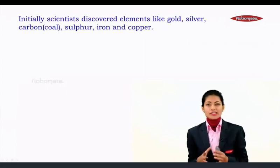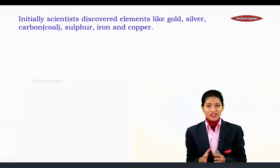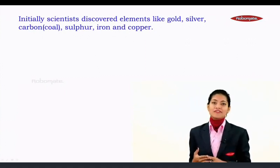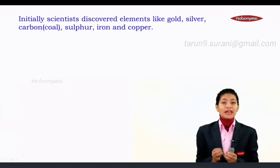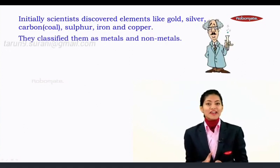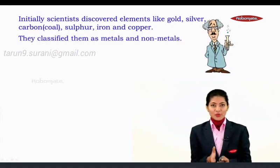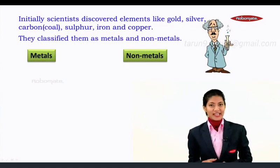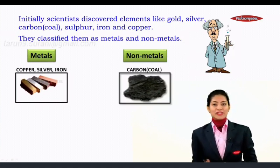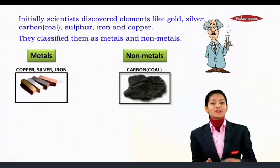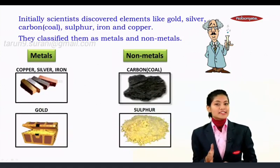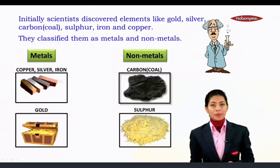Initially, various scientists discovered various elements like gold, silver, carbon, sulphur, iron, and copper. Based on their properties, these elements were classified as either metals or non-metals. For example, copper, silver, and iron are metals, whereas carbon and sulphur are non-metals. Gold is definitely a metal.